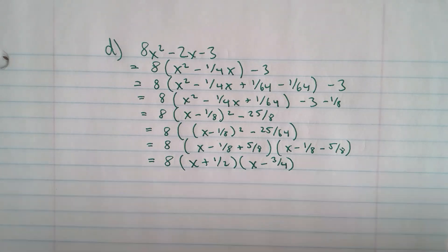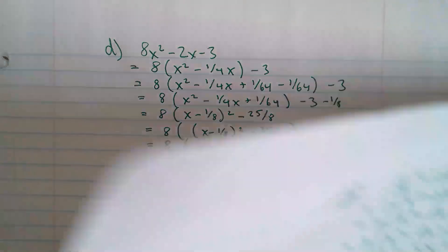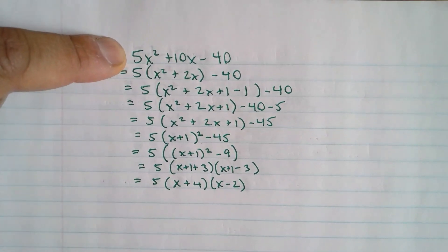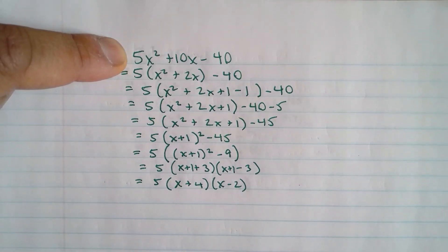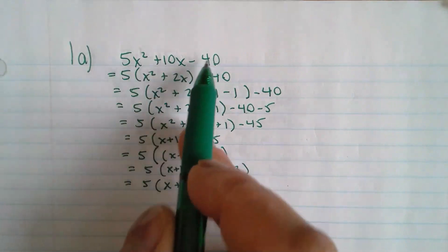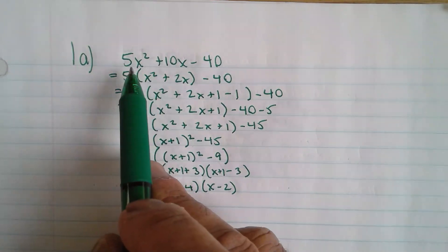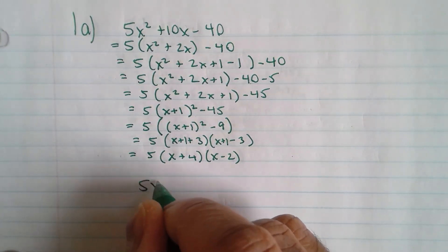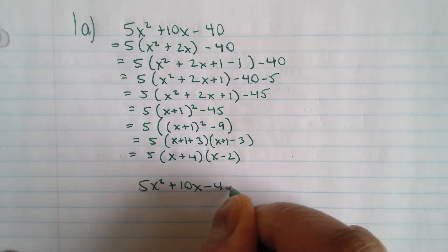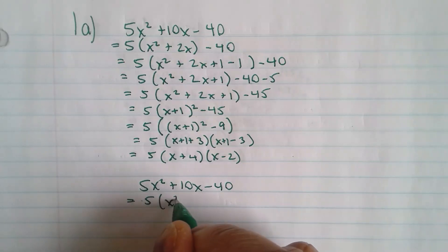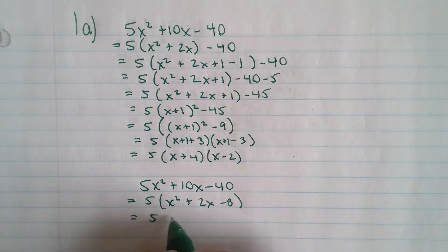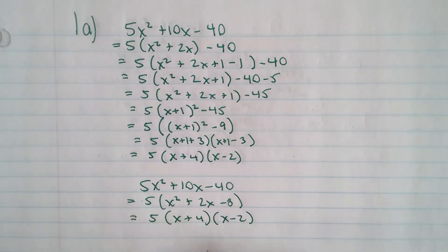I'm going to show you how you can use completing the square to relate back to Munchkin numbering. Looking at question A: if you had 5x² + 10x − 40, you'd first take out the 5 as a common factor, leaving x² + 2x − 8. Then Munchkin numbering: what adds to 2 and multiplies to negative 8? That's positive 4 and negative 2. You get the same answer either way.